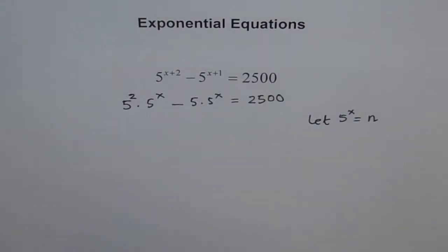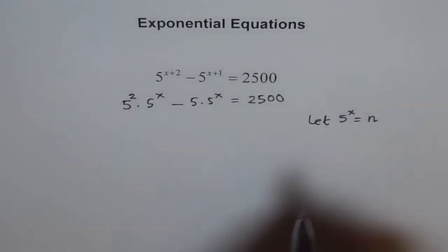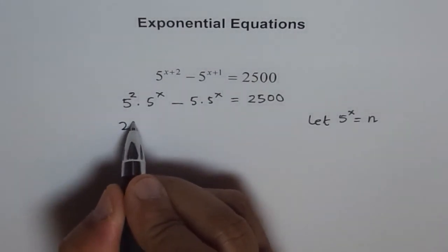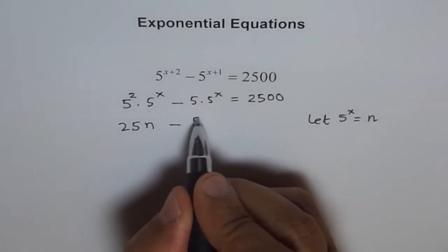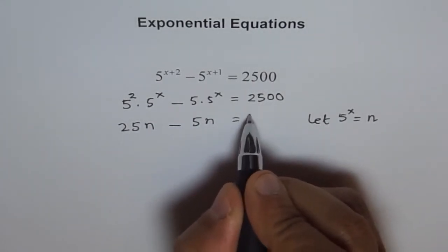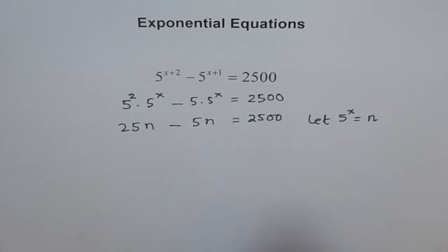In that case the equation becomes 5 square is 25, so we have 25n minus 5n equals to 2500.